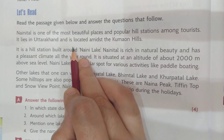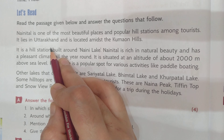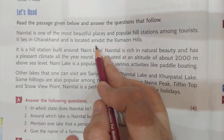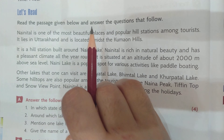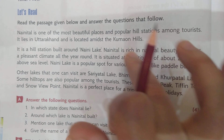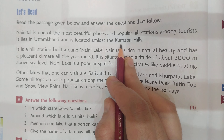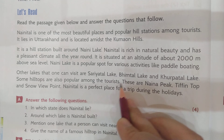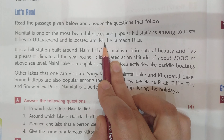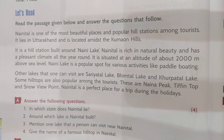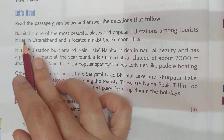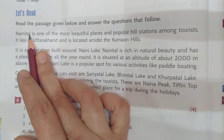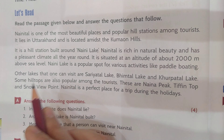It lies in Uttarakhand and is located amidst the Kumaon Hills. It lies in Uttarakhand — that means it is in the state of Uttarakhand — and is located amidst. What does amidst mean? Amidst means in the middle of. When something is surrounded by something, it is called amidst. Like Nainital is located amidst the Kumaon Hills — that means it is surrounded by the Kumaon Hills and is in the middle. Children, take care of the pronouns. 'It' here has been used for Nainital, which is the name of a place, so we use the pronoun 'it' for it.